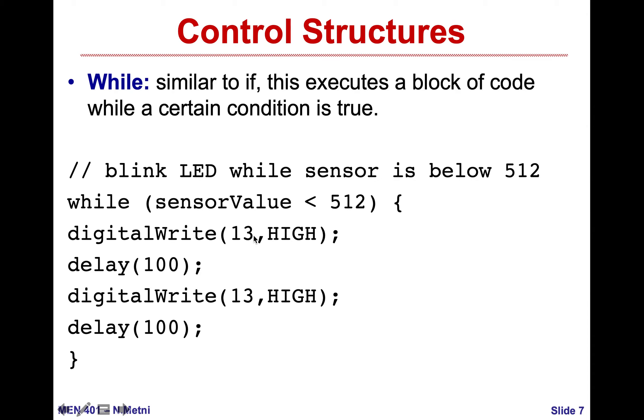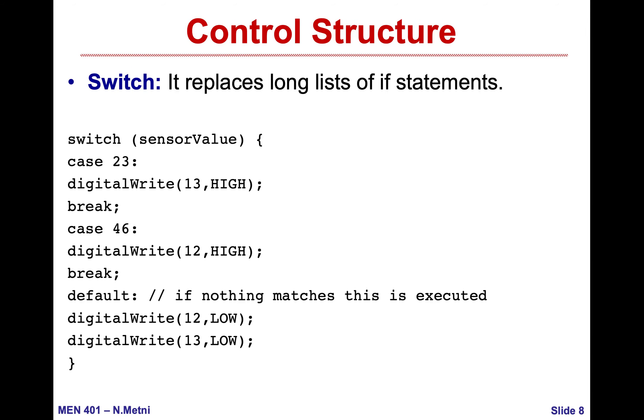Whenever at any instant the sensor value is larger than 512, I will go out of these curly braces and continue my code. So it's a continuous testing of a condition.